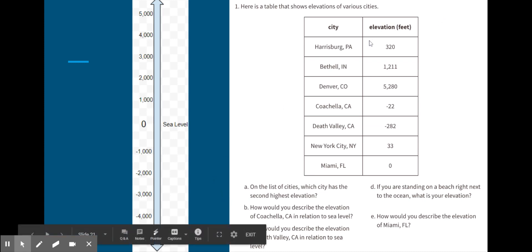Okay, so first we have Harrisburg, Pennsylvania: 320 feet. It's positive, so it would be above sea level. Bethel, Indiana is 1,211 feet—positive again, that would be above sea level. Next up we have the mile-high city, Denver, Colorado, at 5,280 feet above sea level.